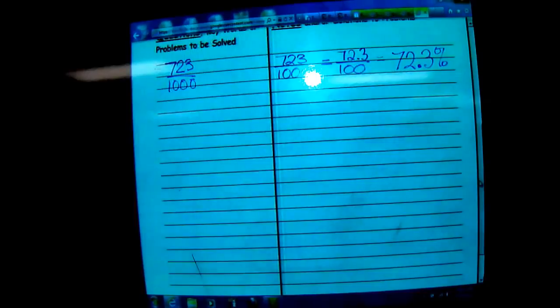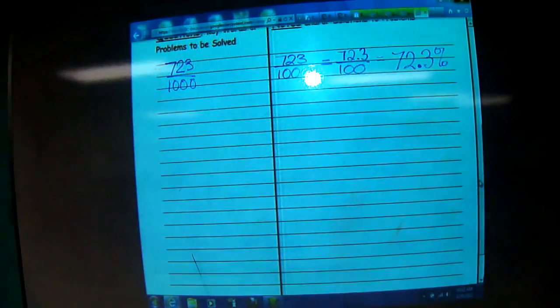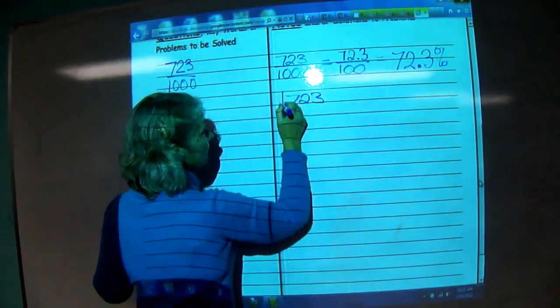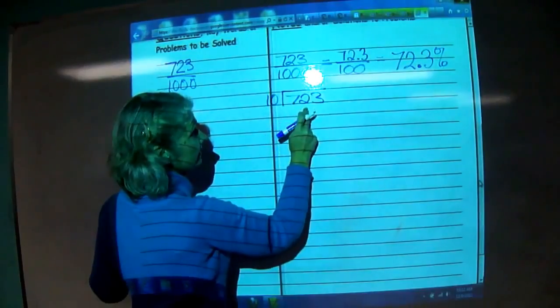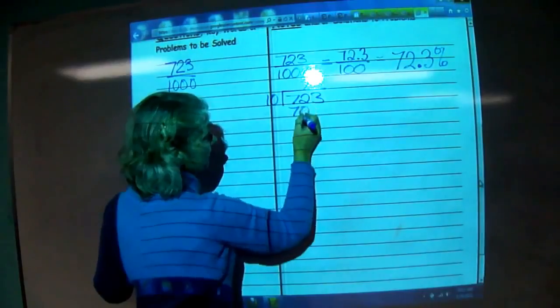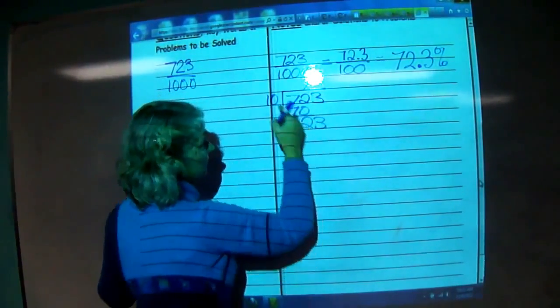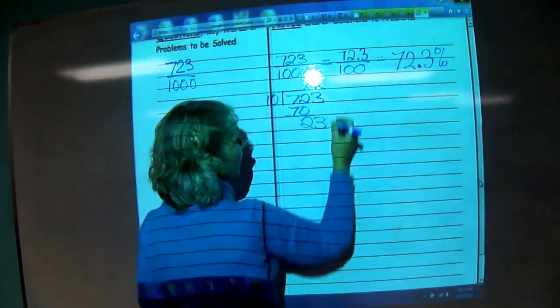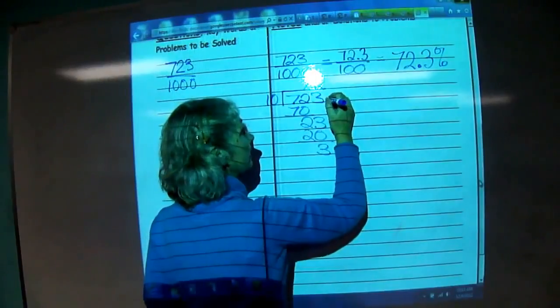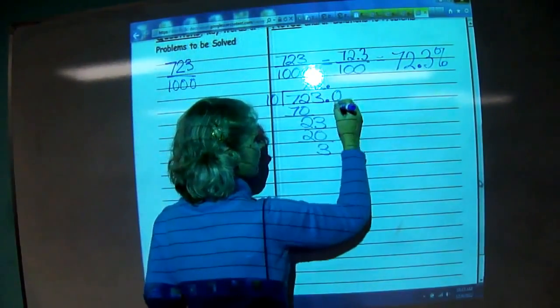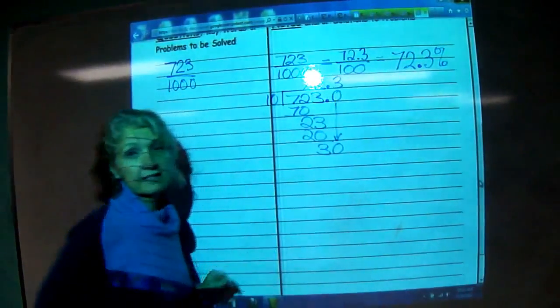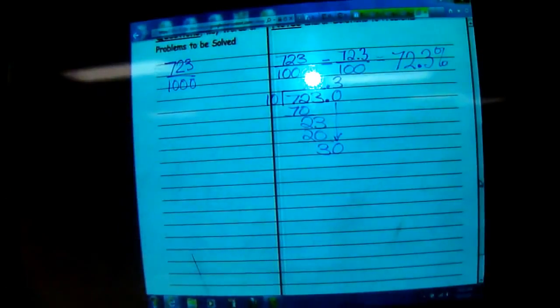So take 723 divided by 10. How many tens in 72? 7. So that's 70, right? 23 left. How many tens in 23? 2. That's 20, right? We still have 3 left. We've got to get rid of it. Put a decimal in, add a 0, bring it down. How many tens in 30? 3. And that's how we do it. So you divided it by 10. Yeah, I just divided it by 10.